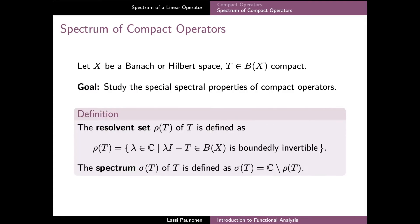We can now turn to studying the special spectral properties of compact operators on a Banach space X. We will especially see that the spectra of compact operators are relatively close to the familiar spectral properties of matrices, especially in the sense that often most of the spectrum of T consists of isolated eigenvalues each with a finite number of linearly independent eigenvectors, but there are of course some important differences as well.